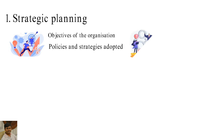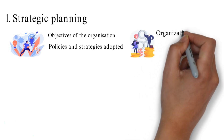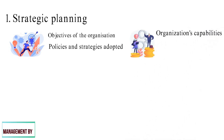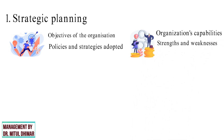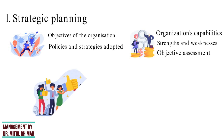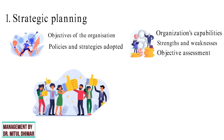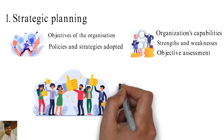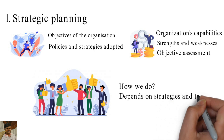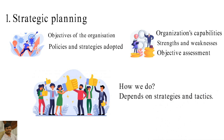Strategic planning involves a total assessment of the organizational capabilities, its strengths and weaknesses, and an objective assessment of the dynamic environment. For example, a goal such as increasing customer satisfaction from 82% to 90% by December 31 is strategic; how it is achieved depends on strategies and tactics.